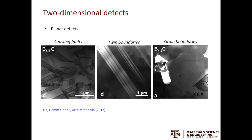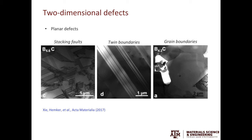Moving to two-dimensional defects, these are also called planar defects. In the micrograph on the left, you can see these fringe-like features — these are stacking faults. Stacking faults are one type of planar defect. In the micrograph in the middle, you see those sharp interfaces. These interfaces are twin boundaries. Across the twin boundary, the crystals exhibit mirror symmetry.